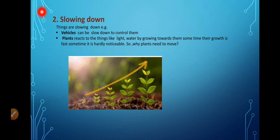Our second classification is slowing down. The things are also slowing down. For example the vehicles, car, bus, truck, they can be slowed down so that we can control them. Similarly plants, they also move. Plants move towards light or they move towards water. Why?